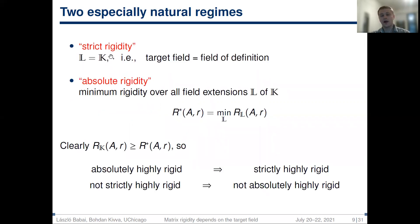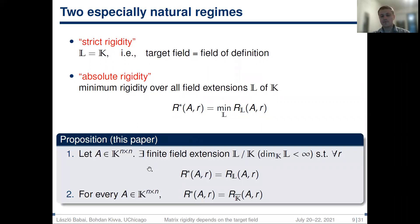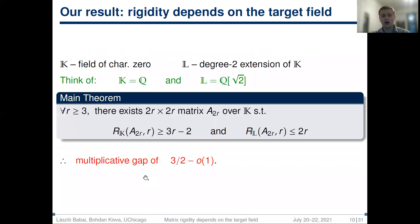We argue that there are two especially natural regimes to study. In the strict rigidity regime, we allow only changes from the field of definition of the matrix. In the absolute rigidity regime, we do not restrict the field at all — we allow changes from an arbitrary field extension. We can similarly define strictly highly rigid and absolutely highly rigid matrices. Since strict rigidity is more restrictive, strict rigidity is at least absolute rigidity, meaning an absolutely highly rigid family is also strictly highly rigid. In the paper, we show that for a given matrix, absolute rigidity is always achieved over some finite field extension, and moreover, for any matrix, absolute rigidity is achieved for the algebraic closure of the field of definition.